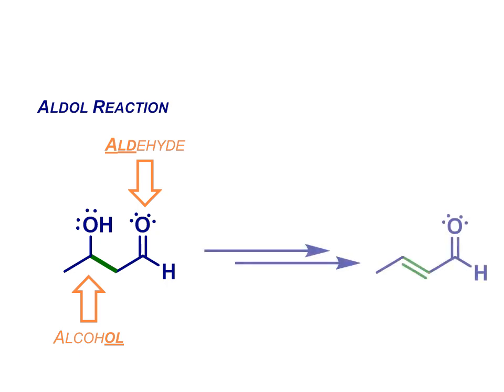However, it's also possible for this compound to undergo an elimination reaction, losing water to generate an enone. Note that the new carbon-carbon double bond in the alkene product is conjugated with the carbon-oxygen double bond, which gives it greater stability and helps drive this reaction.